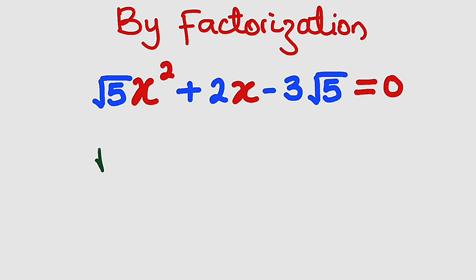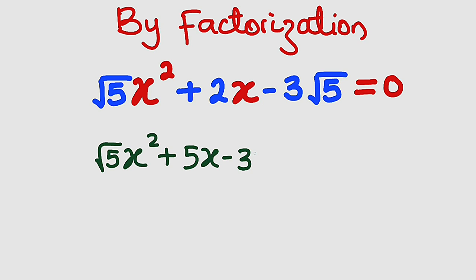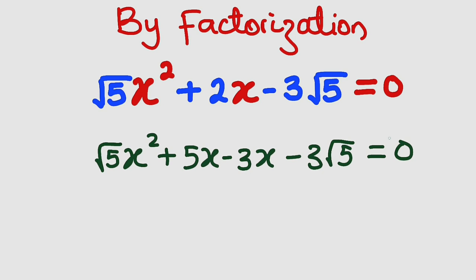So we have root 5x squared plus 5x minus 3x, then minus 3 root 5. This is equal to 0.